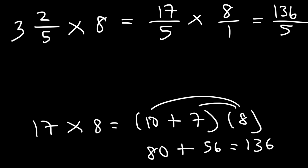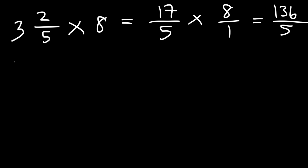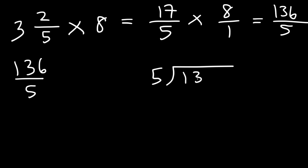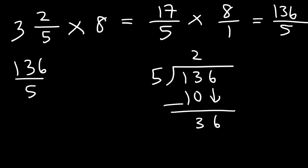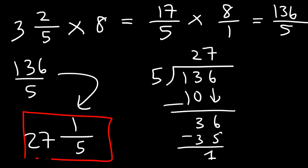80 plus 56 is 136, and 5 times 1 is 5, giving us 136 over 5. Using long division: 5 goes into 13 twice, remainder 3; bring down 6, 5 goes into 36 seven times, 5 times 7 is 35, remainder 1. So the answer is 27 and one-fifth.